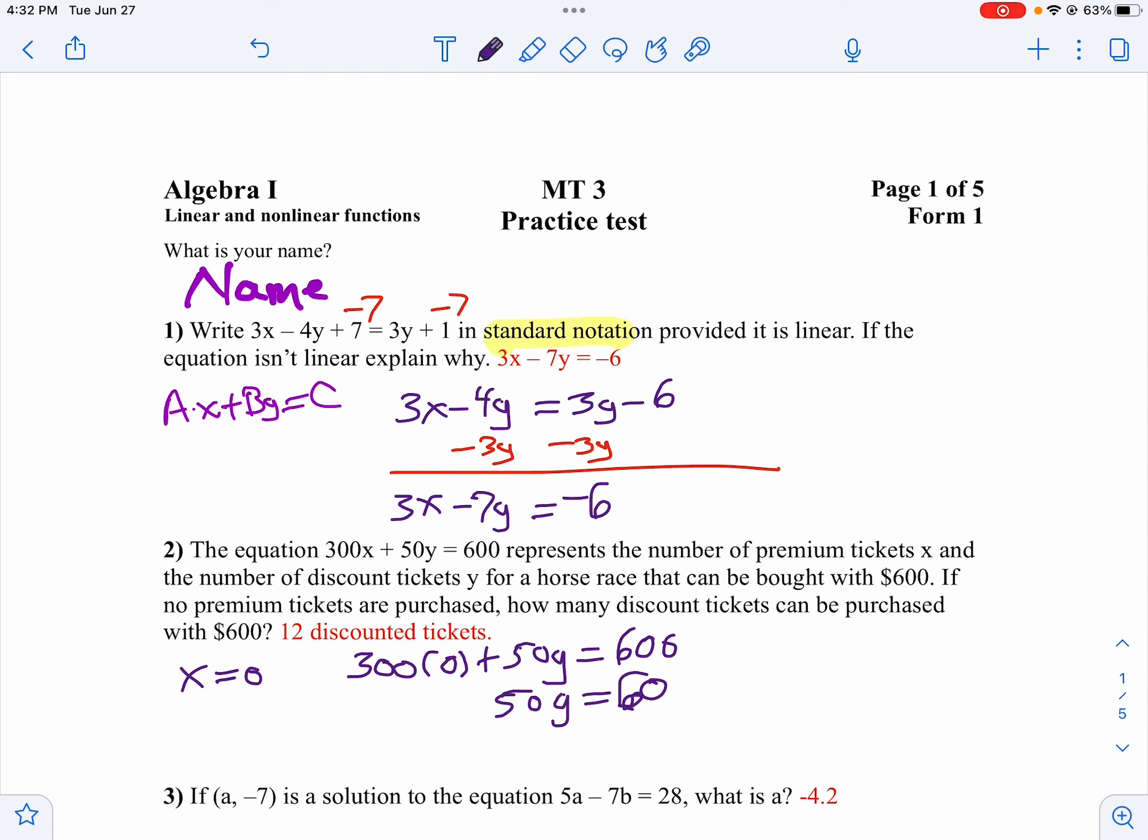So if we divide both sides by 50, we get Y would be, notice my 0s reduce out, 60 divided by 5 is 12. Don't write Y equals 12. Write a complete sentence or tell me what the 12 discounted tickets are.